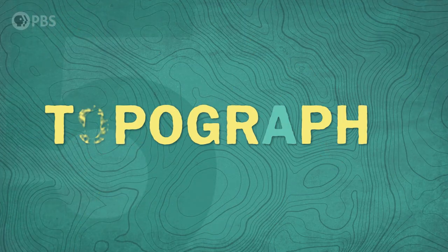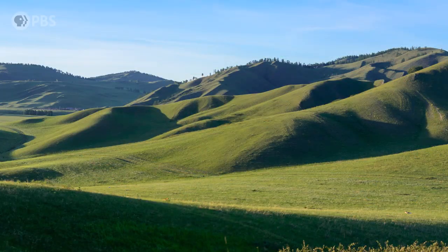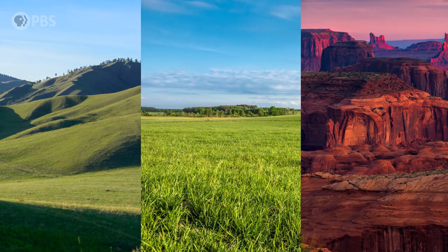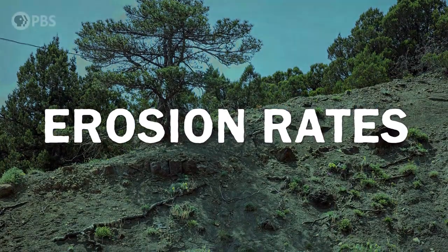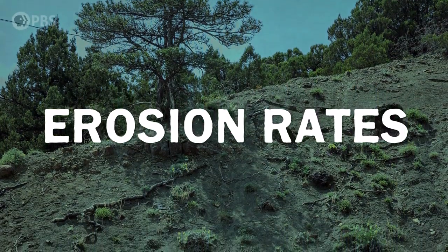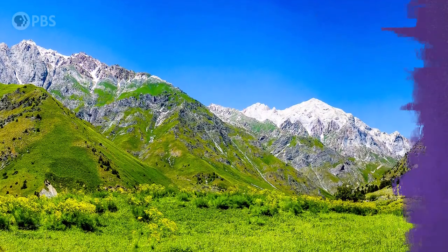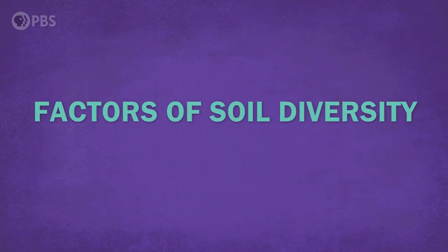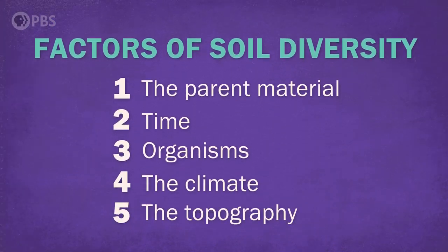Finally, topography will also influence soil formation. Topography is the landforms and landscapes of an area — is it hilly, flat, or full of canyons? Something with a steep slope might result in high erosion rates and a loose, dusty soil, whereas thicker soils might form down in the valley between two mountains. These are the five factors that create the diversity of soil: parent material, time, organisms, climate, and topography.